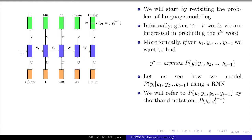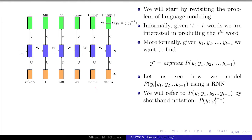The word produced at time step t depends on a few previous words. How does the recurrent neural network ensure that? At any time step I am going to give it only one word as input. It ensures dependence on all previous words via the recurrent connections and the state S_t.